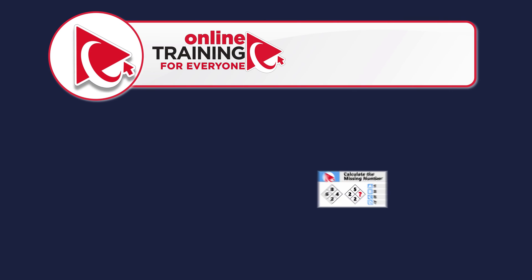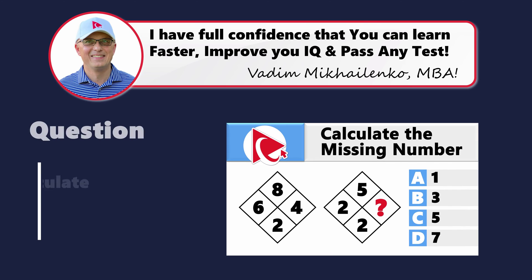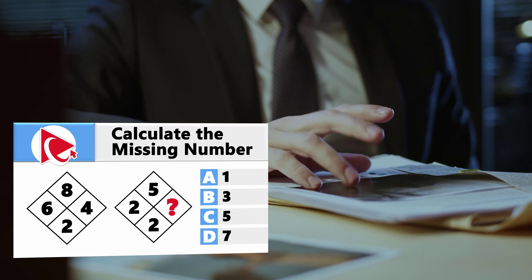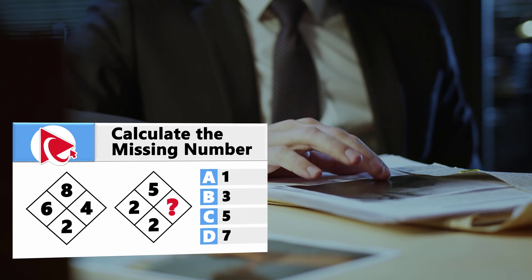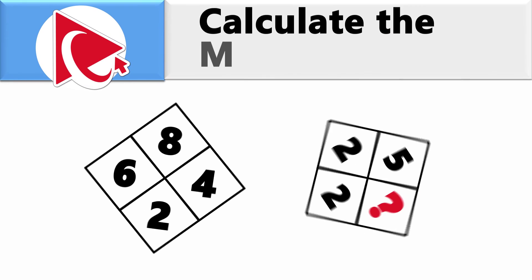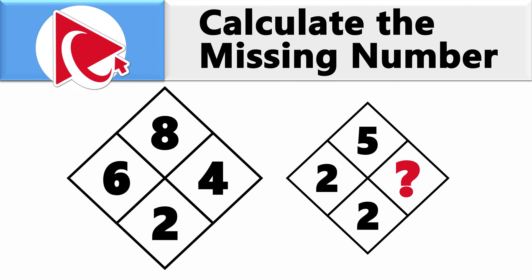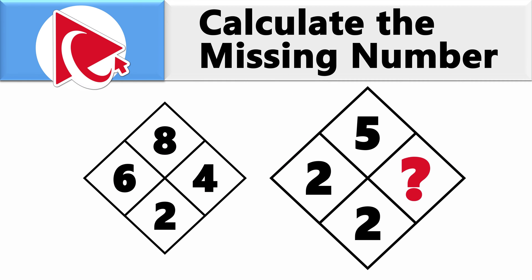And now it's time for you to grab your thinking goggles. I have a question for you that you need to solve on your own. And the question is so intricate, Sherlock Holmes would need a cheat sheet. You're presented with two diamonds. Each diamond has four numbers inside. In the first diamond, which is on the left, the numbers are 8, 6, 2, and 4. And in the second diamond on the right, the numbers are 5, 2, 2, and then comes the missing number.